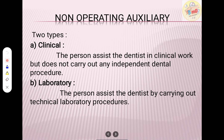Under non-operating auxiliaries there are two types: clinical and laboratory. The clinical non-operating auxiliary assists the dentist in clinical work but does not carry out any independent dental procedure. The laboratory technician assists the dentist by carrying out technical laboratory procedures but is not involved in clinical procedures.